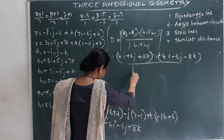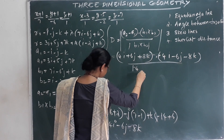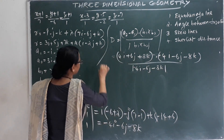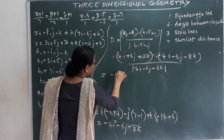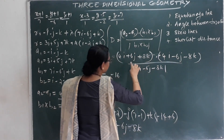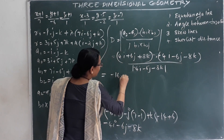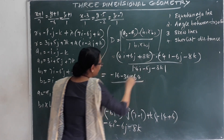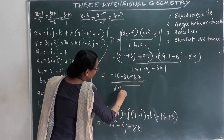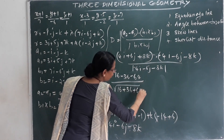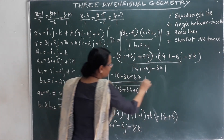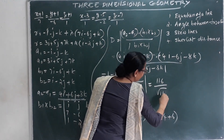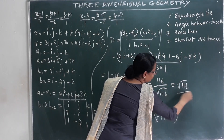The dot product gives negative 16 minus 36 minus 64 equals negative 116. The modulus of b1 cross b2 is root of (16 plus 36 plus 64) equals root 116. The distance is negative 116 divided by root 116, and taking the absolute value gives root 116 as the final answer.